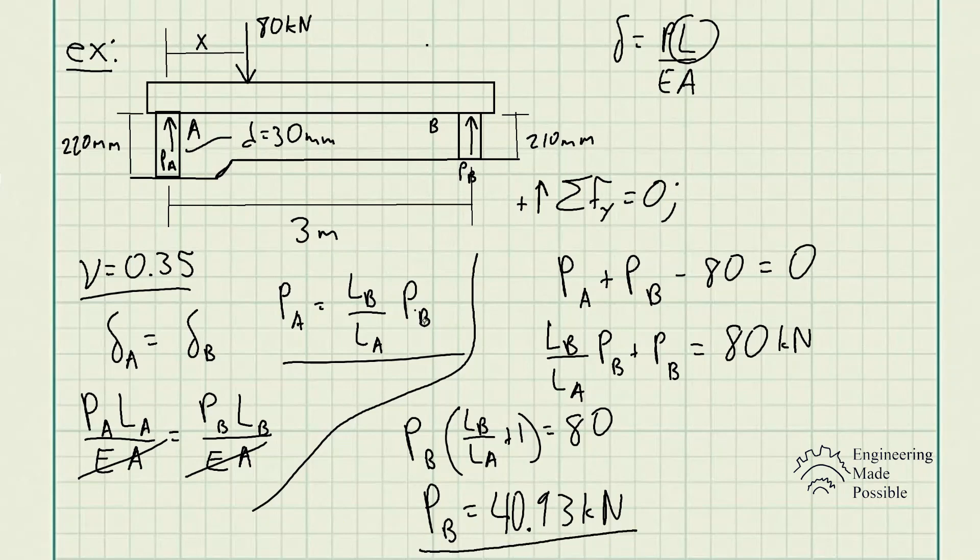Since we have PB, we can easily solve for PA using the ratios of the lengths, right? The 210 millimeters divided by 220. So we get PA equals 39.07 kilonewtons. We're able to solve for how much force each of those cylinders are taking, and we see they are not equivalent.